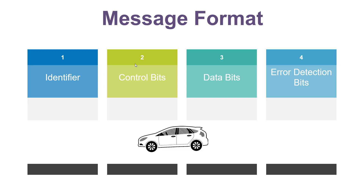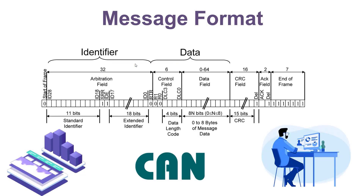The identifier is a unique ID associated with each node on a CAN network and acts as a unique address for the message. Other components on the network can determine if the message is relevant to them based on this identifier. Each message frame consists of identifier, control bits, data bits, and error detection bits. Control bits help manage the priority of messages, ensuring critical information is delivered promptly, while data bits carry the actual information being transmitted.